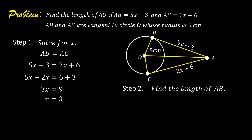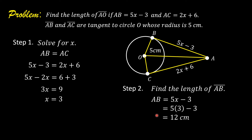Step number 2: Find the length of segment AB. It is given that AB is equal to 5X minus 3. Substituting 3 for X, we have 5 times 3 minus 3, which is equal to 12. So AB is equal to 12 centimeters.